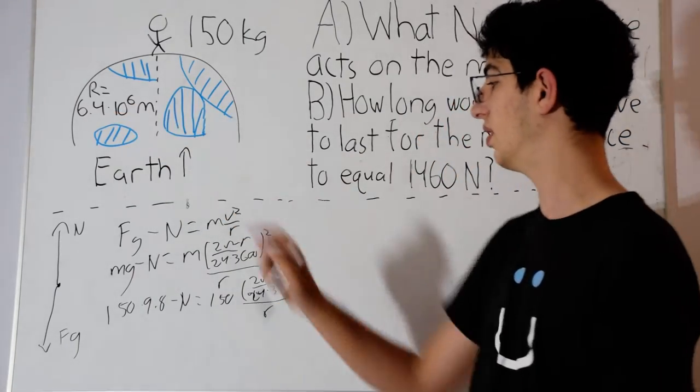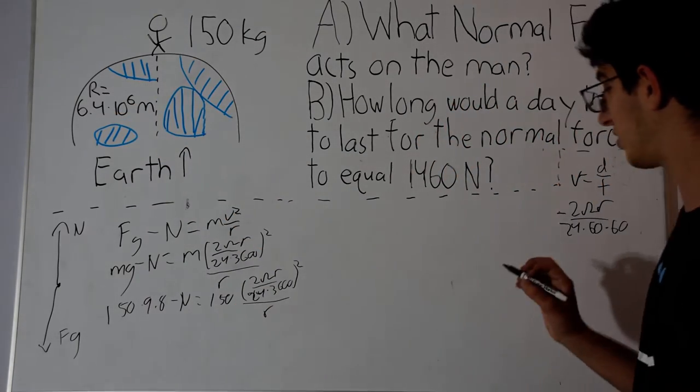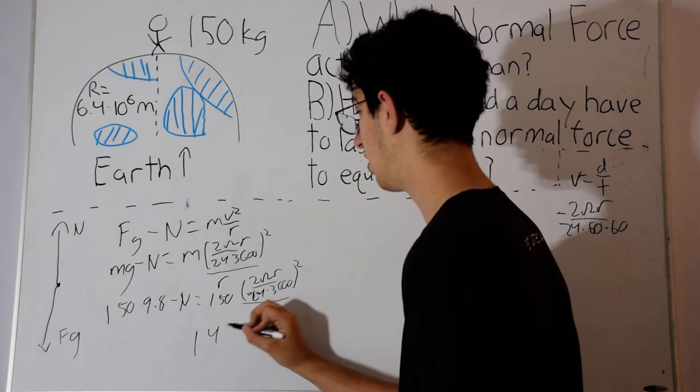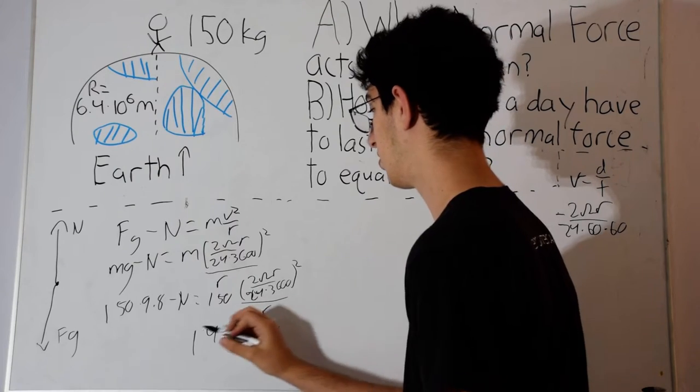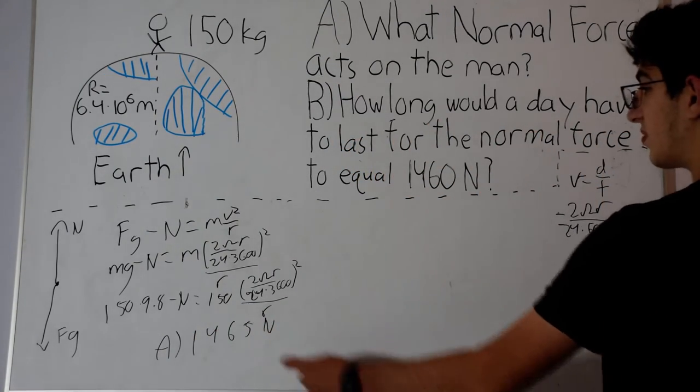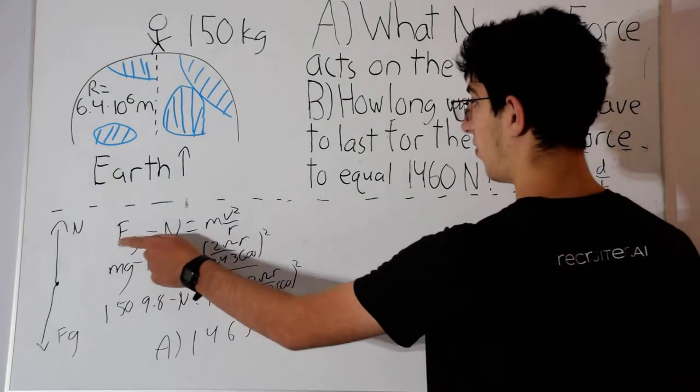So we can get the normal force is equal to 1465 newtons. This, as we expect, is slightly less than the force of gravity.